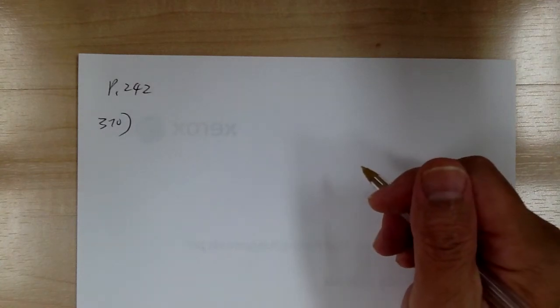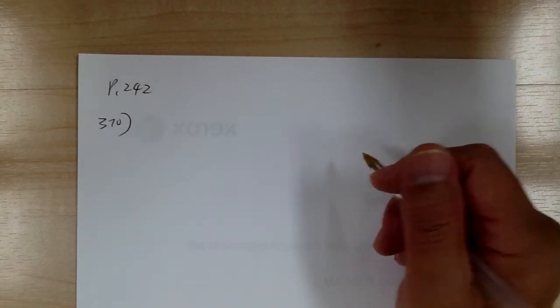Okay, let's go to page 242 and number 370. This one is talking about the length of the longest diagonal of a regular dodecagon. A dodecagon is 12-sided, so let's go ahead and draw it.